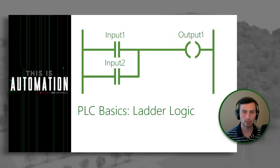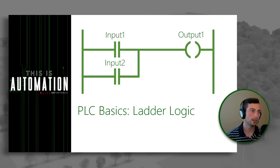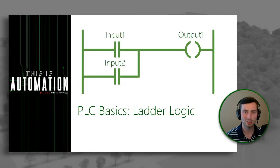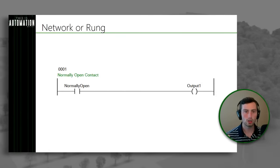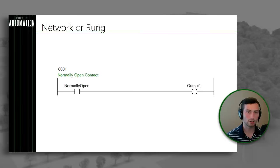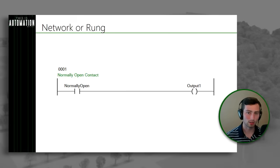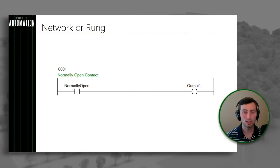Now let's move on to ladder logic. We're going to give a quick introduction to some of the concepts behind ladder logic, where it comes from, and then we'll actually jump into some software and take a look at what it looks like live. So to start, let's look at what we have here on the screen, which is called a network or a rung. When we talk about ladder diagram or ladder logic, it's made up of these networks or rungs. The reason it's called ladder is because when you have a program made up of multiple networks or rungs, it looks like a ladder — that's why they're called rungs.